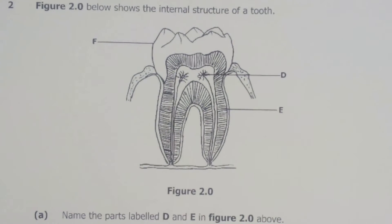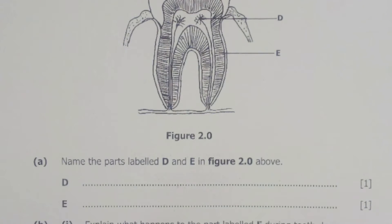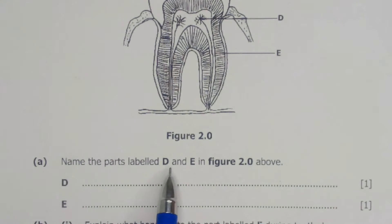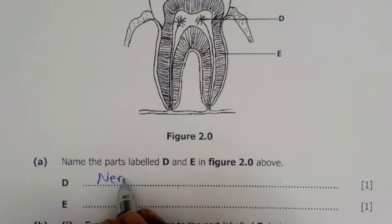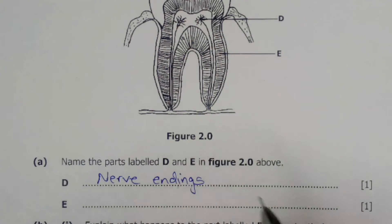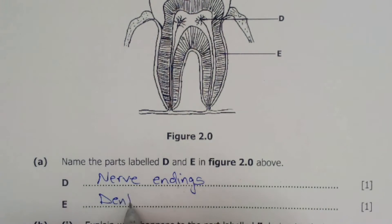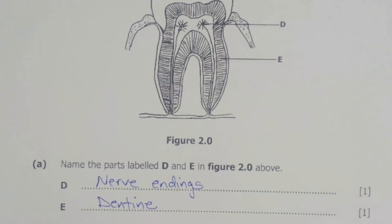Let's look at the questions which follow this structure. The first part, question A, says name the parts labeled D and E in figure 2.0. So D is the nerve endings, and for E, this is the dentine. Those were the parts which we needed to label.